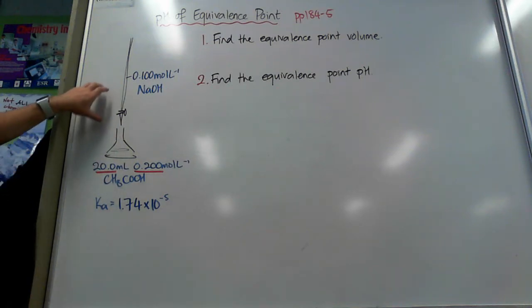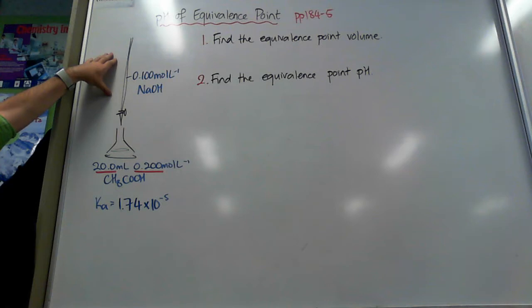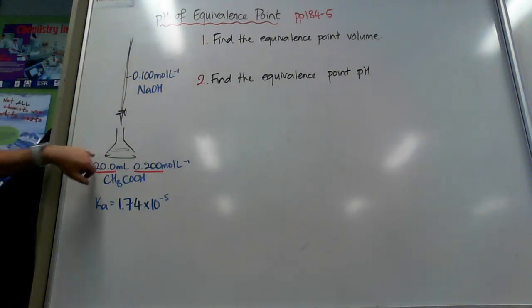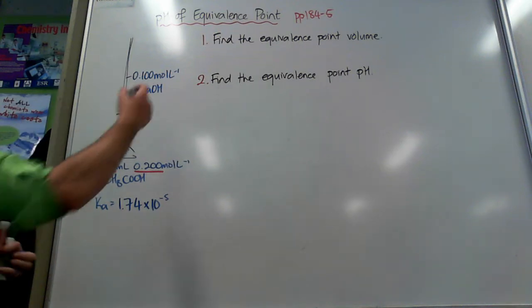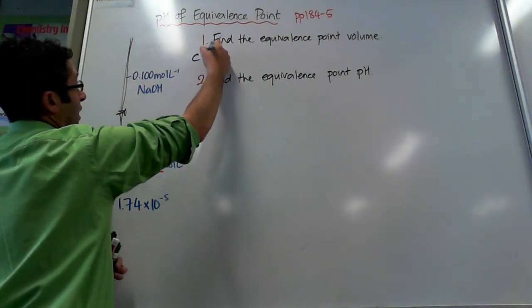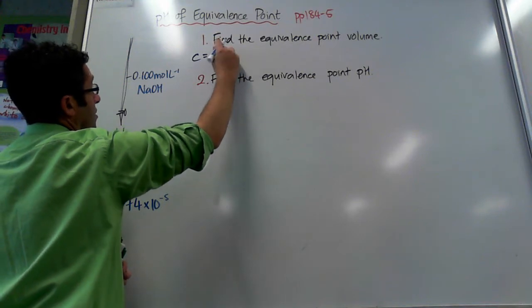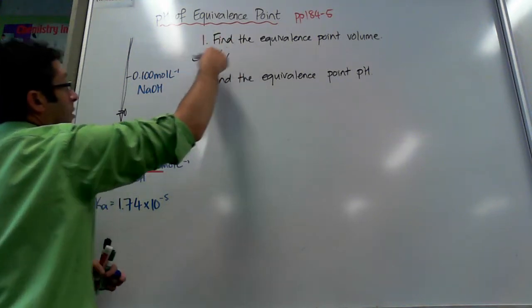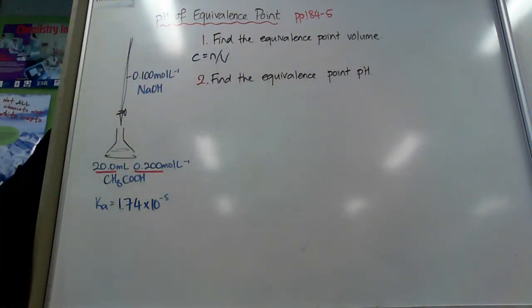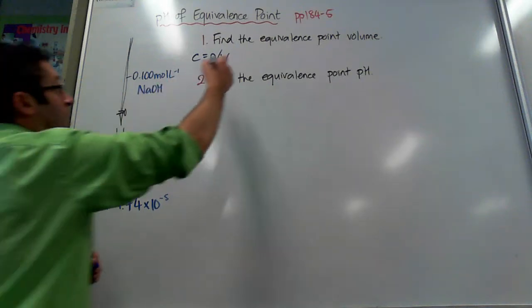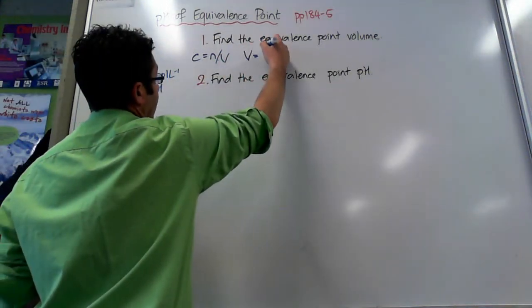That means for equivalence I need to get 0.04 moles of sodium hydroxide into that Erlenmeyer flask to react. So I need the same amount, an equivalent number of moles of this in here. So I'm trying to get 0.04 moles of sodium hydroxide. So I rearrange my C equals N over V so that volume is the subject, so volume equals N over C.